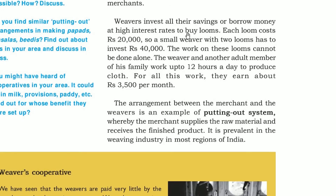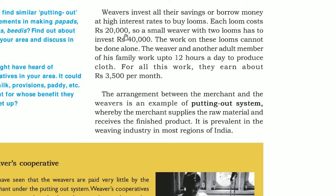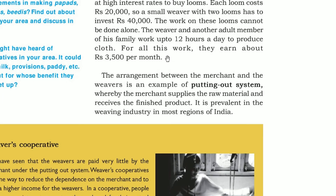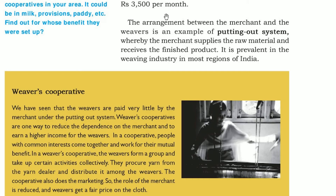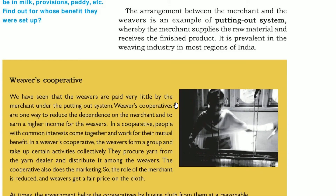Weavers invest all their savings or borrow money at high interest rates to buy looms — each loom costs 20,000 rupees. If you have two, that is 40,000 rupees at minimum. The weaver and other adult members of the family work 12 hours a day to produce cloth and earn about 3500 rupees per month, though this has increased. The arrangement between the merchant and the weavers, which we call the putting-out system, is where the merchant supplies raw material and receives the finished product.